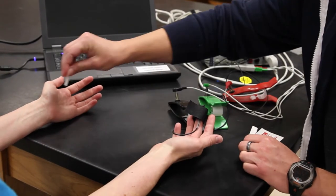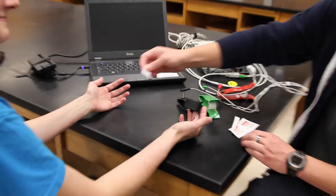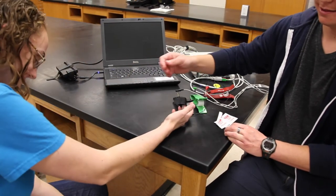Clean the skin where the electrodes will be placed with an alcohol prep pad. You should clean the subject's right wrist, left wrist, and right ankle.